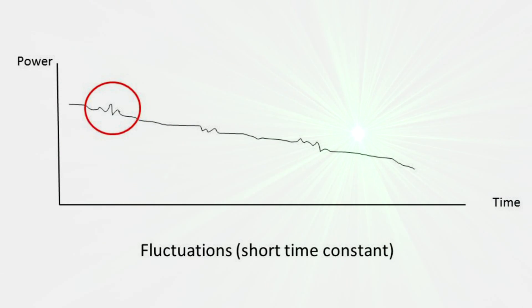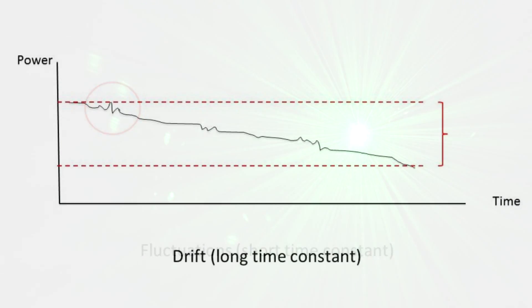We'll look at two separate kinds of instability: fluctuations, where the time constant is short, and drift, where the time constant is longer. As a first step when trying to measure an unstable laser, you'll need to observe your readings and note their behavior with time. Once you know the nature of the problem, you're ready to proceed.